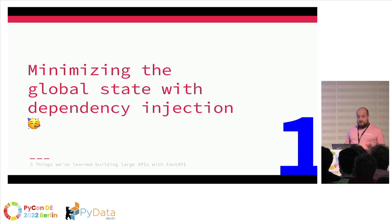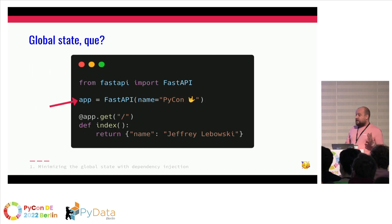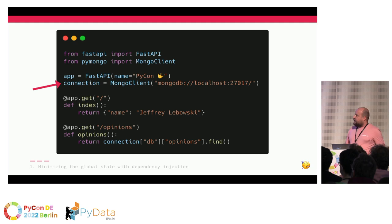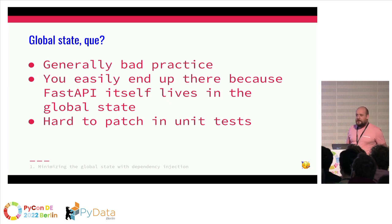The first learning is to minimize your global state with dependency injection. A quick refresh: what is global state? It's the app object at the top of your application. It lives there and gets loaded when your code base is loaded. This can be a bit problematic. When you want to connect to a database, you just add it there — MongoDB, Kafka, Redis — and that's fine for small applications, but generally, global state is not a good practice.